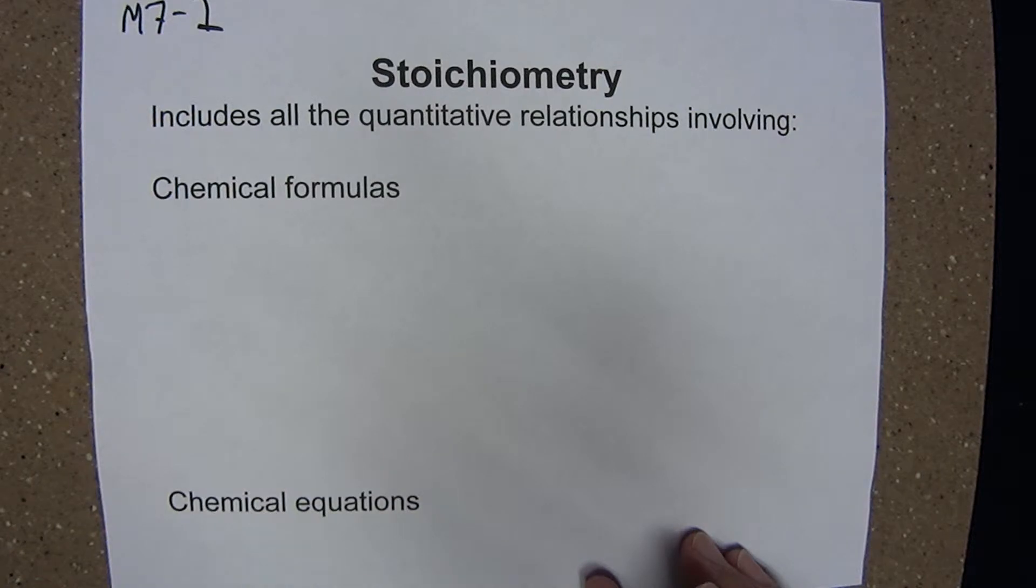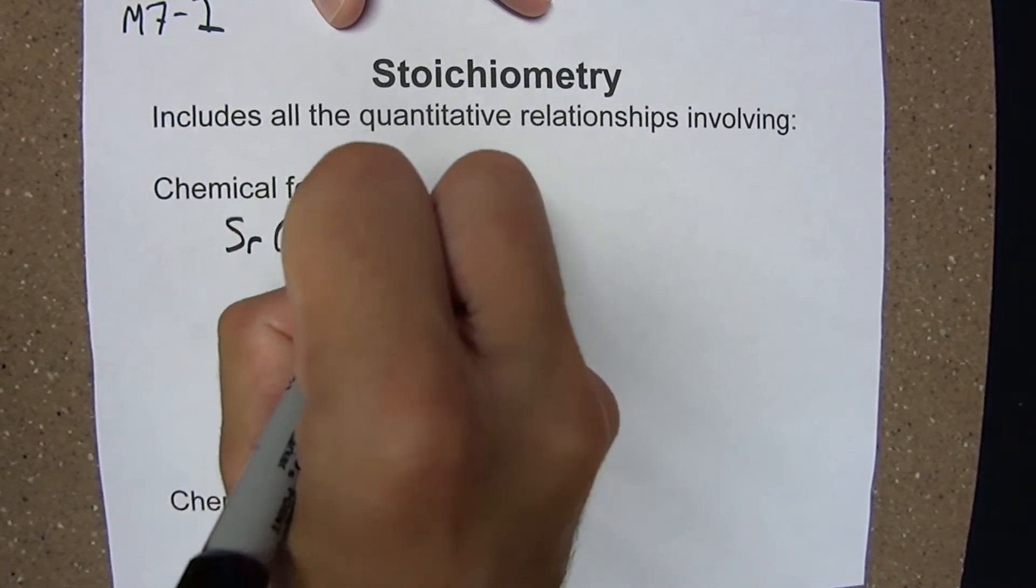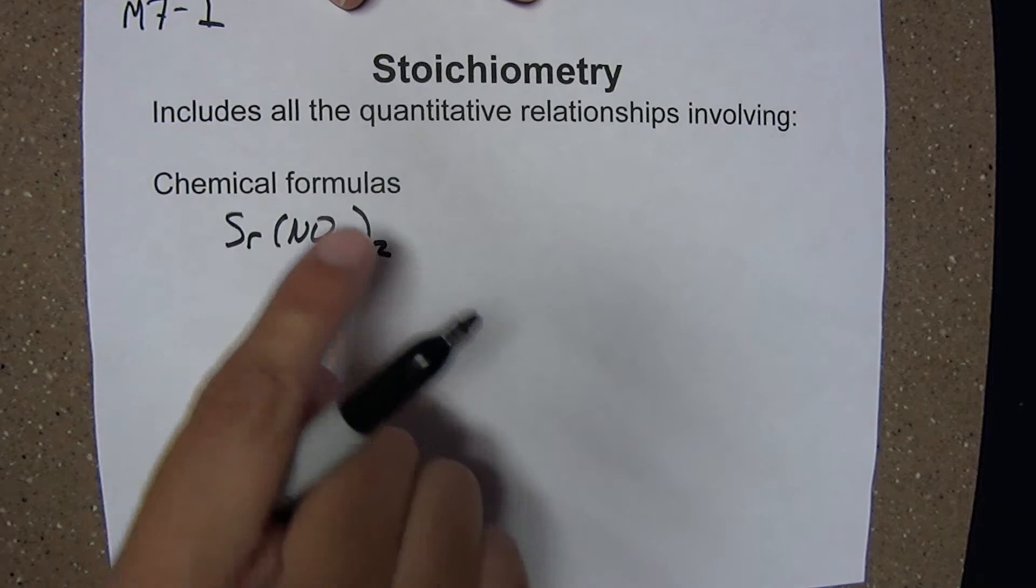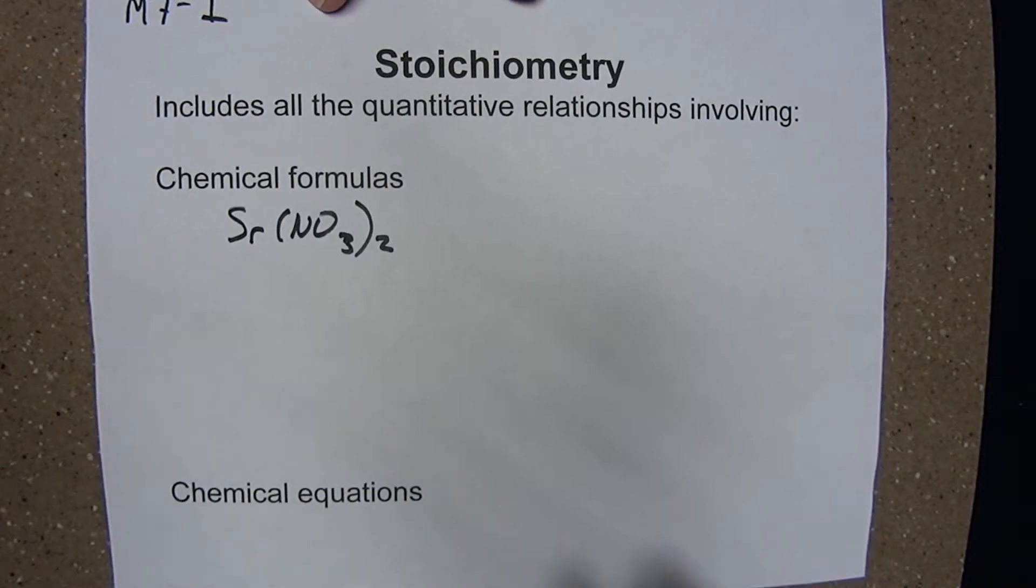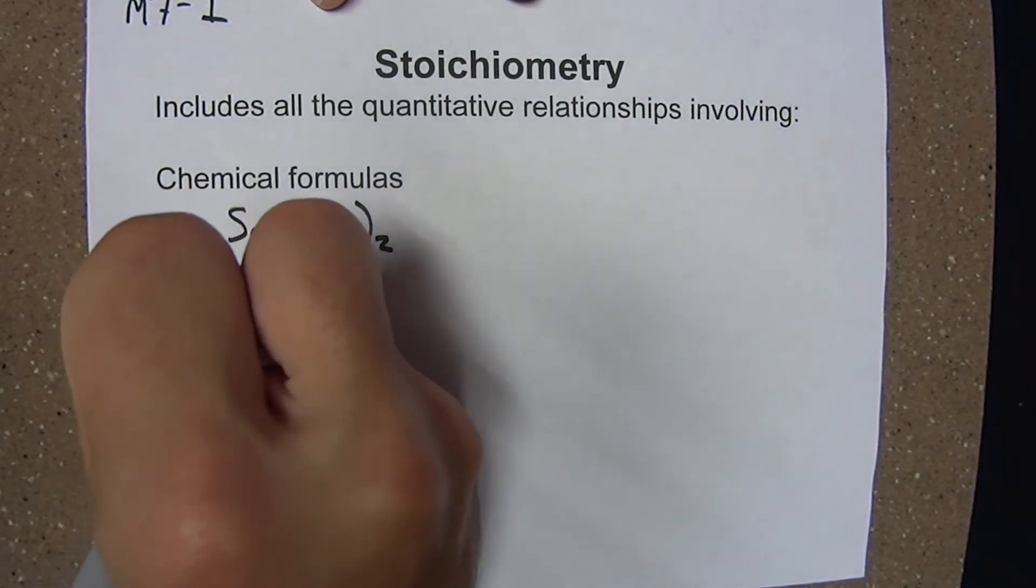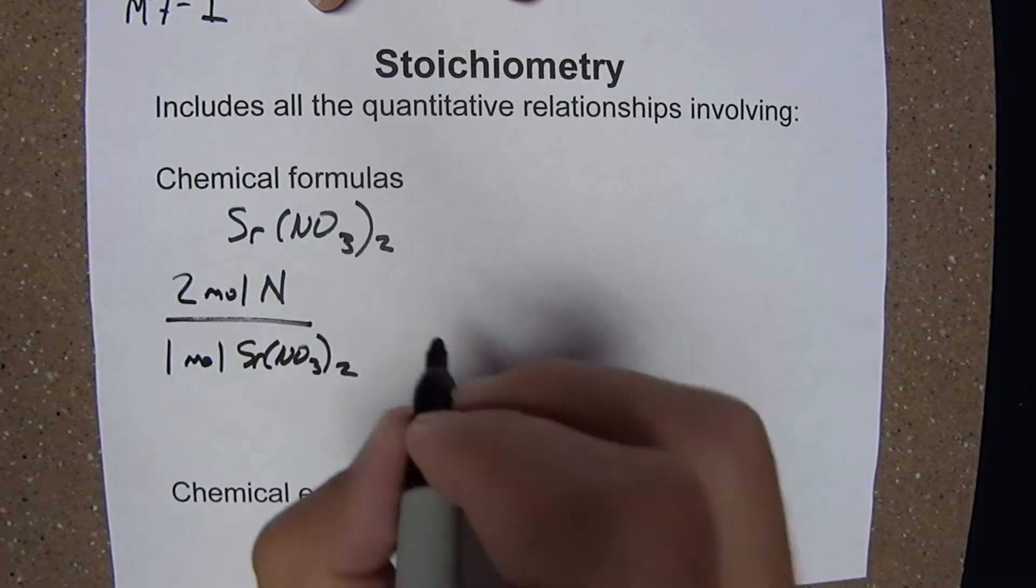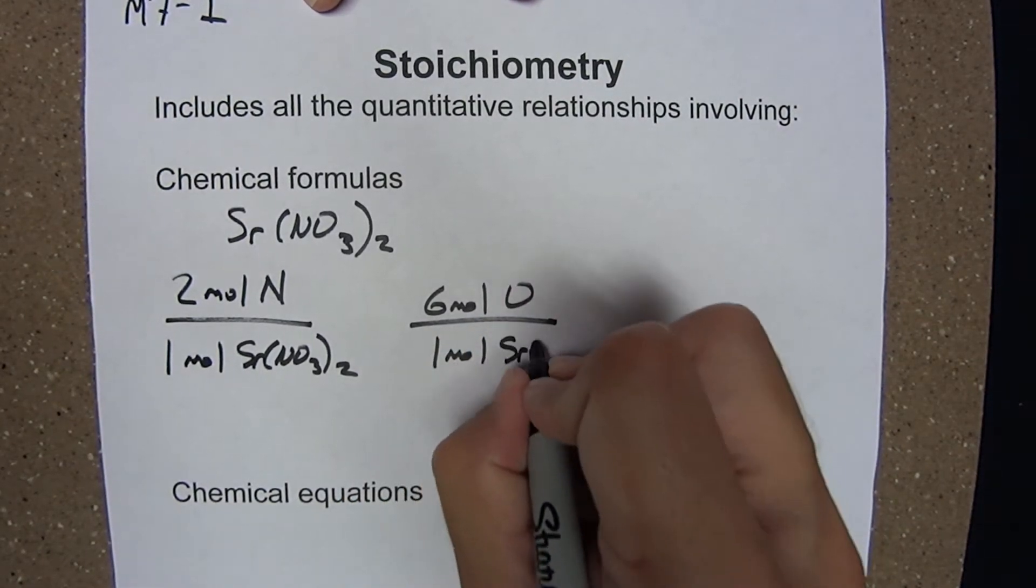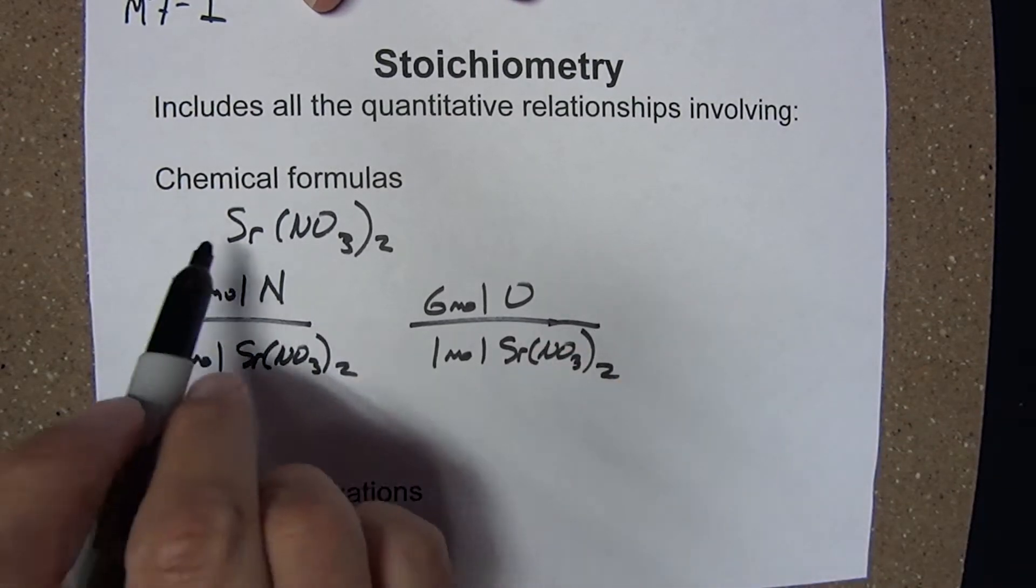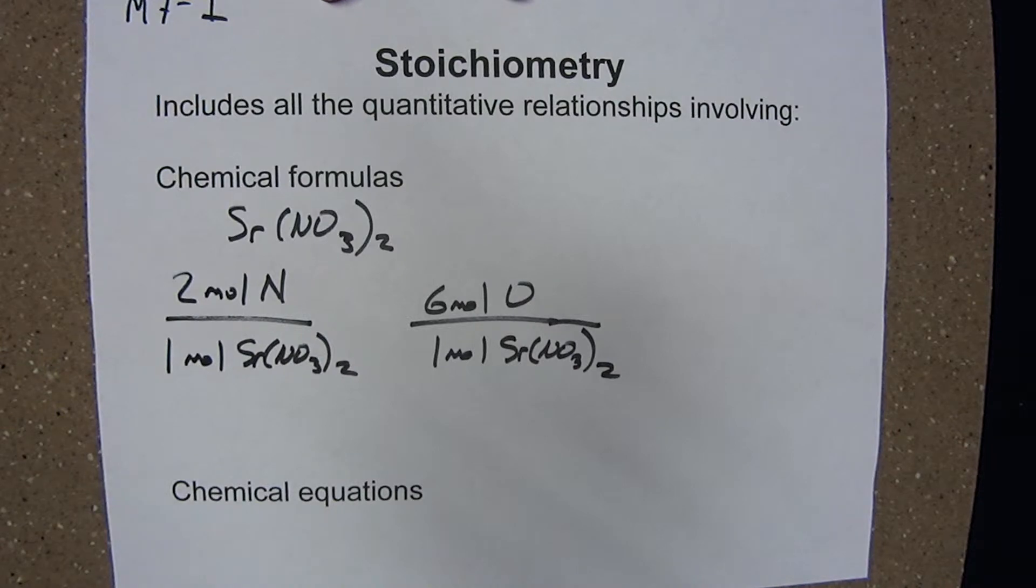So, if we were to go back and look at the strontium nitrate that we had seen previously, Sr(NO₃)₂, I know a little bit about the proportions in which these elements have combined based on that chemical formula. For example, I know that there are two moles of nitrogen per one mole of compound. Or, there are six moles of oxygen in one mole of this compound. In essence, the chemical formula itself is providing conversion factors for element to compound. Let's explore a more sophisticated problem using that concept.